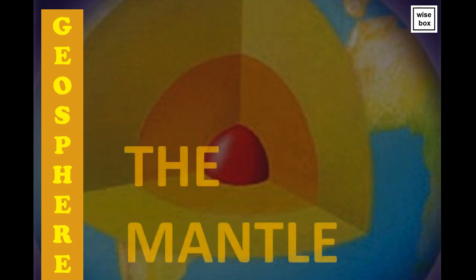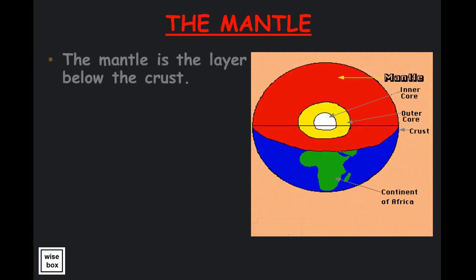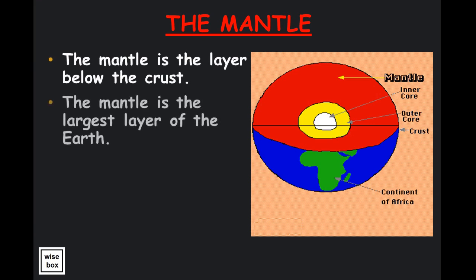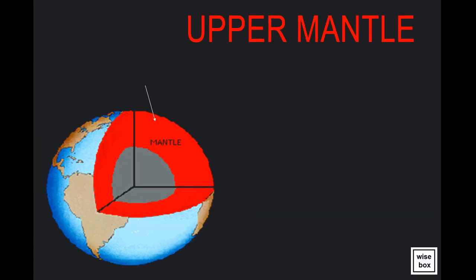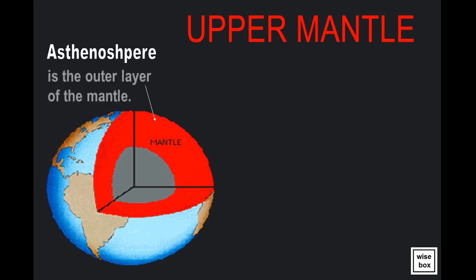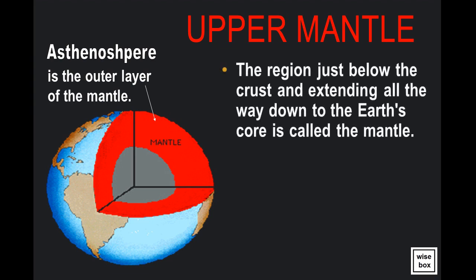The mantle is the layer below the crust. It is the largest layer of the Earth. The mantle is divided into two regions: the upper and lower sections. The asthenosphere is the outer layer of the mantle. The region just below the crust, extending all the way down to the Earth's core, is called the mantle. This is where magma is stored.